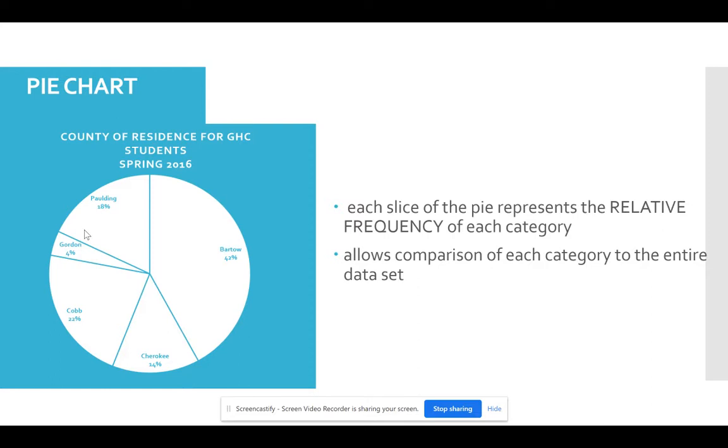So the two primary graphs or charts for qualitative data are a bar chart and a pie chart. And again, most statistical software packages, Minitab, Microsoft Excel, will create a pie chart for you.